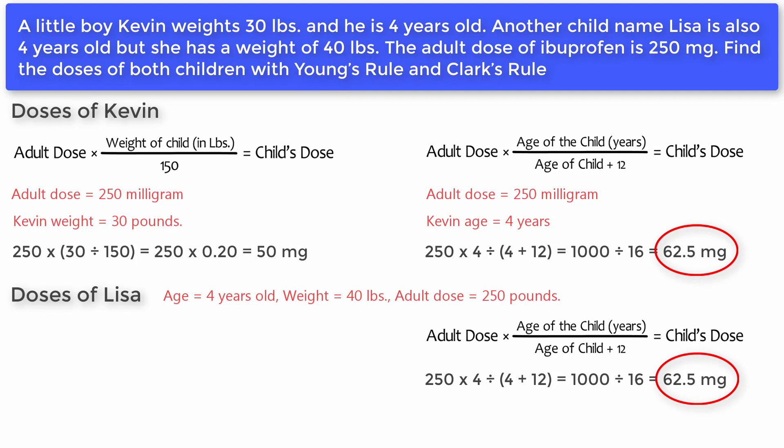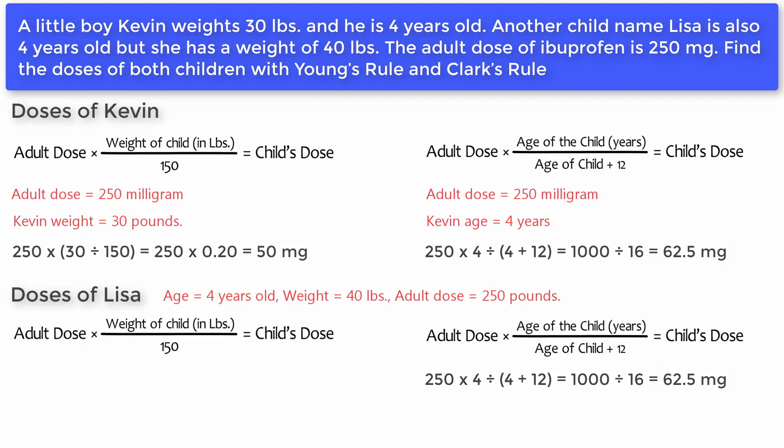Now Clark's Rule for Lisa: adult dose times weight of child divided by 150 equals child's dose. 250 times 40 divided by 150 equals approximately 66.7 milligrams. So comparing Kevin and Lisa, they produce different dosages using Clark's Rule, but Young's Rule produces the same answer for both children.